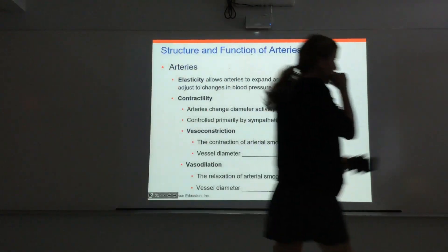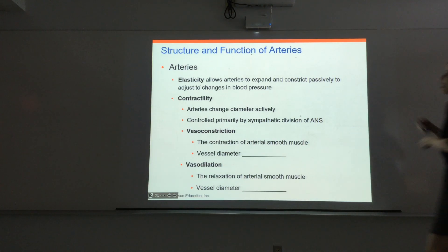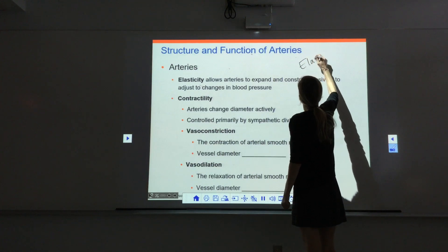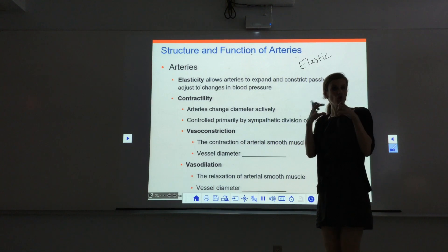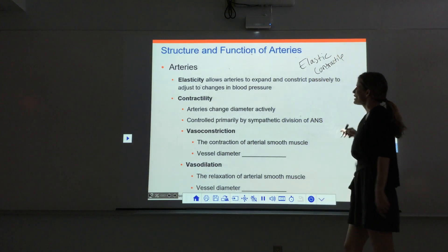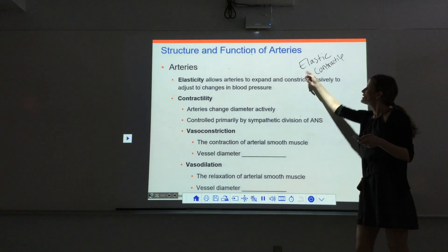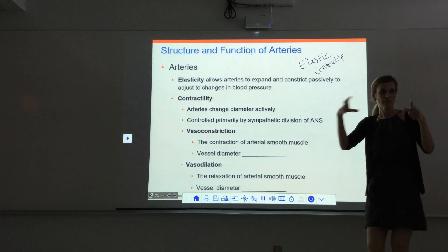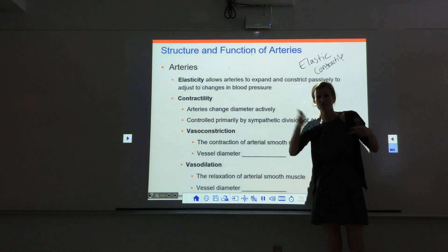We'll talk through the types of vessels in a little bit more detail now. Arteries are elastic and they're muscular. Because they're so muscular we can say that they're contractile. All that muscle gives them the ability to really contract and relax a lot. The elastic fibers give them that elasticity. These both affect the size of the vessel, but in very different ways — either passively or actively.